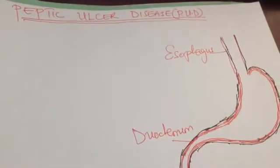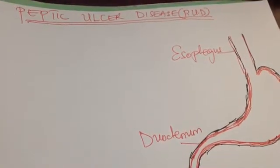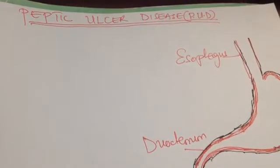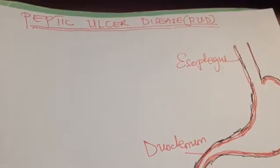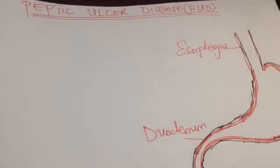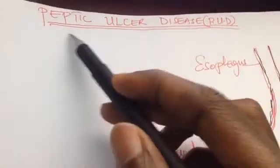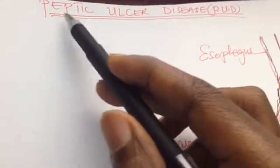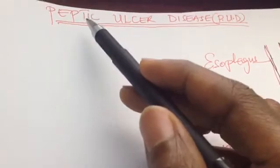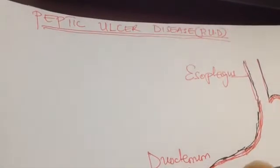Today we are going to discuss peptic ulcer disease (PUD), continuing from the last video which gave us a foundation to understand it. When we say 'peptic,' it refers to anything related to an environment that aids in the digestion of food, especially the stomach and duodenum — a peptic environment.